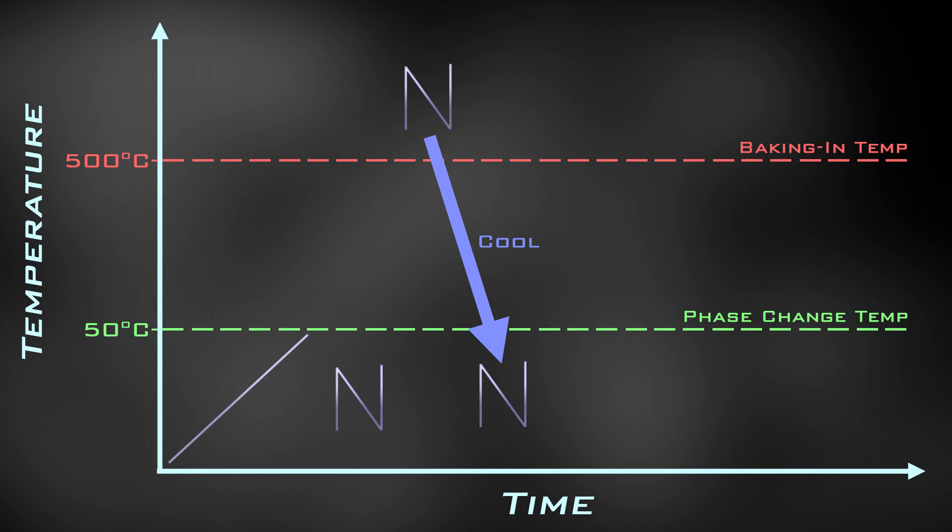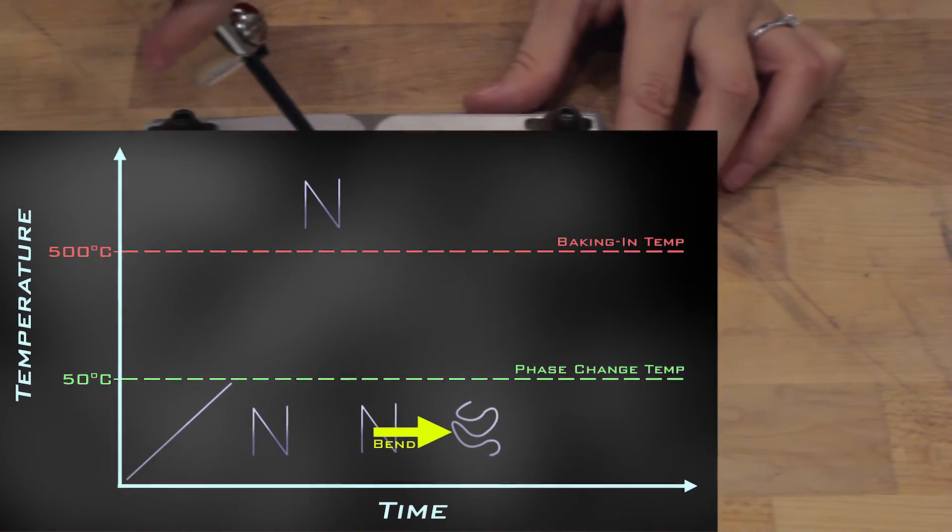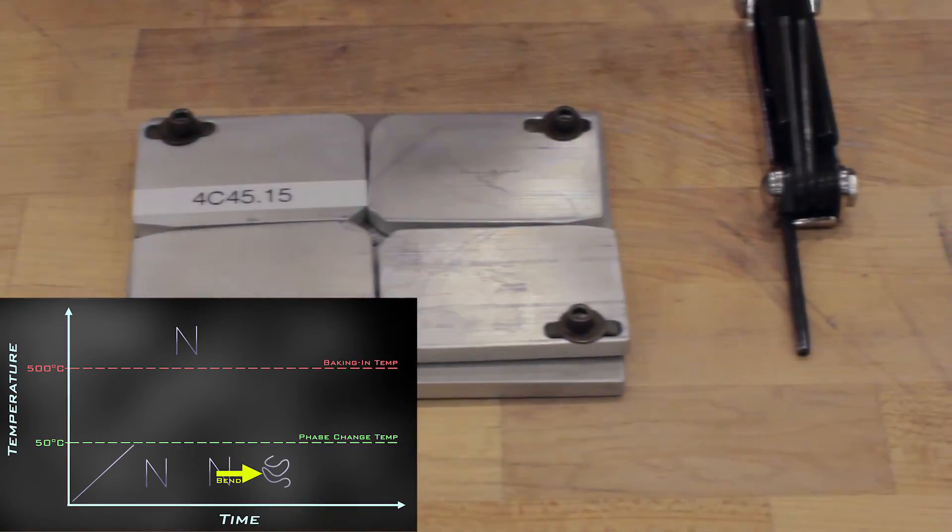The wire is now in the low temperature state and is easily deformed. Let's see if you can predict what will happen next.